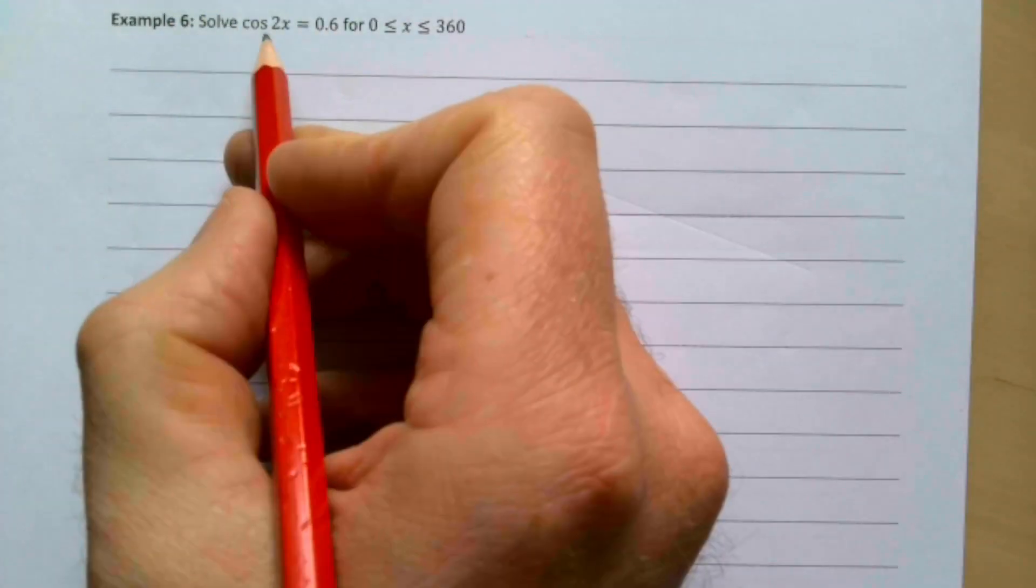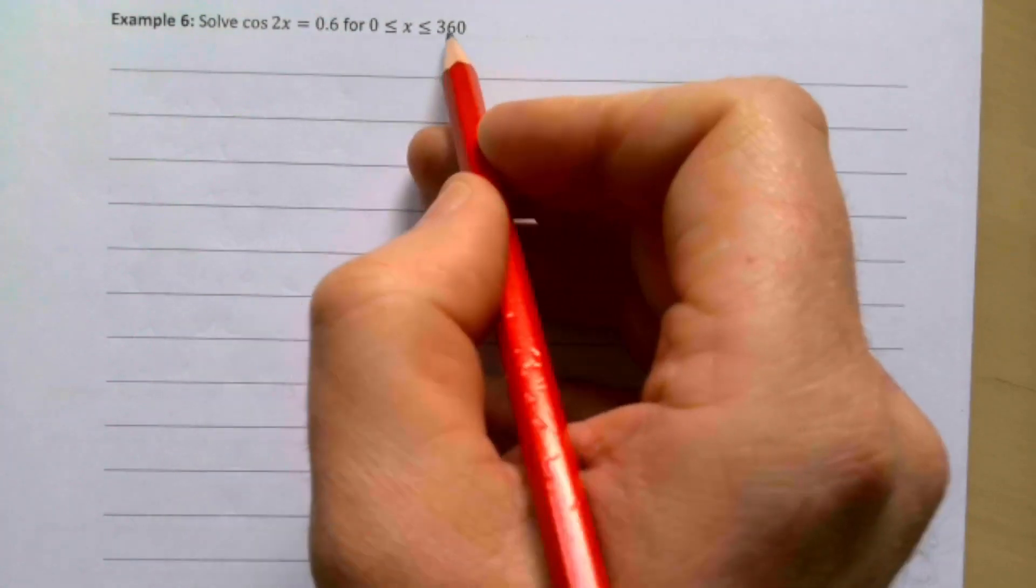This is ASPureMathNotes. We are on unit 8 trigonometry, and we're doing some trig equations. This one here is solve cos 2x equals 0.6 for 0 less than or equal to x less than or equal to 360. This is the first of this type.